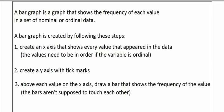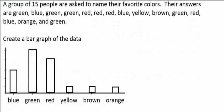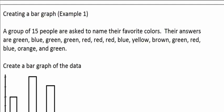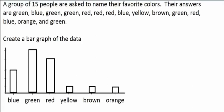Let's go to our first example of making a bar graph. Imagine that 15 people are asked to name their favorite colors, and their answers include green, blue, and so on — all 15 colors. To make a bar graph, we first list all the categories that appeared: blue, green, red, yellow, brown, orange. Then we make a y-axis with tick marks, and since green appears five times — the highest frequency — our y-axis has to go up to five.